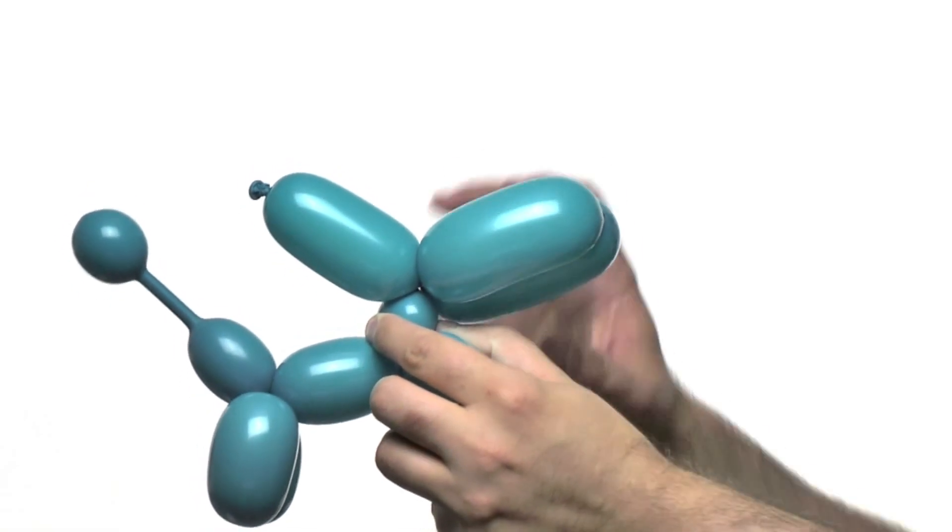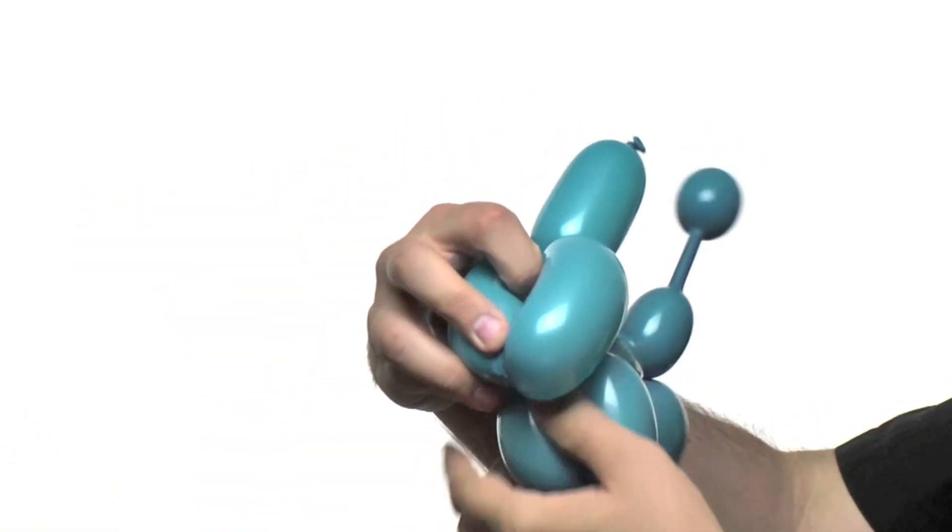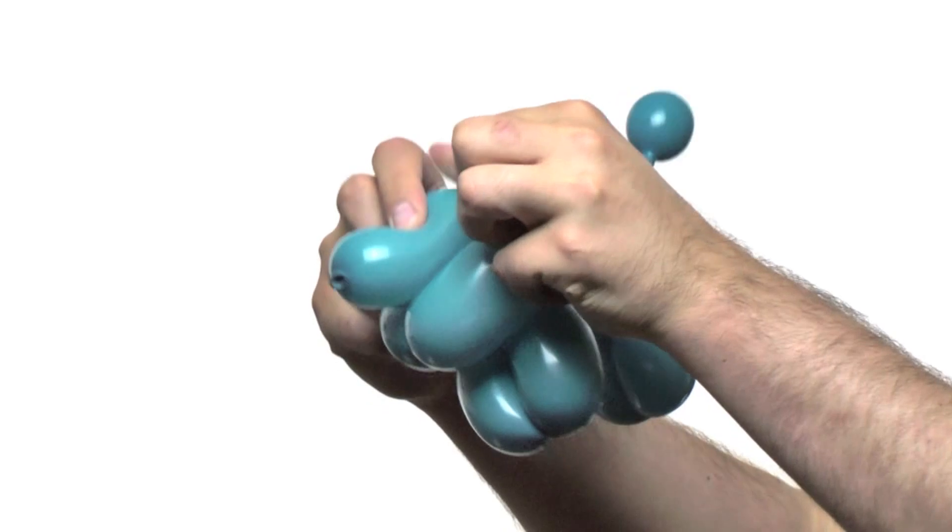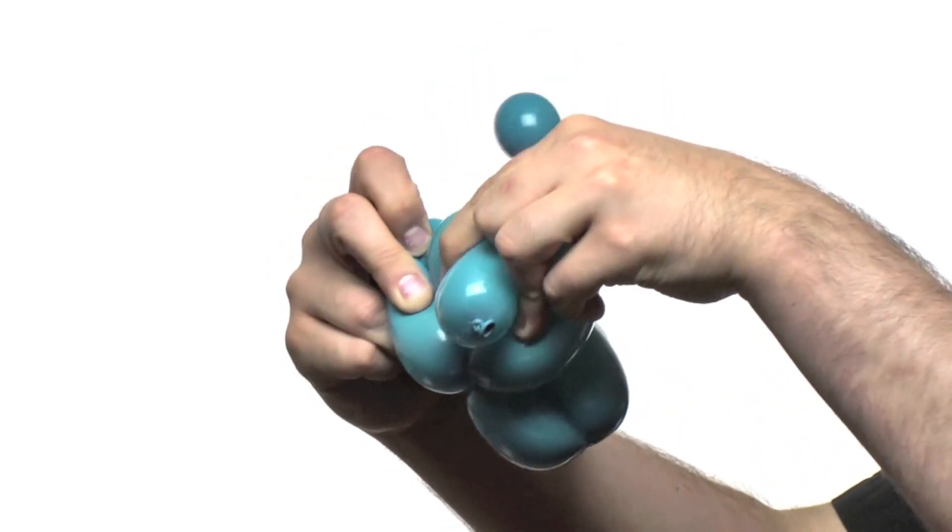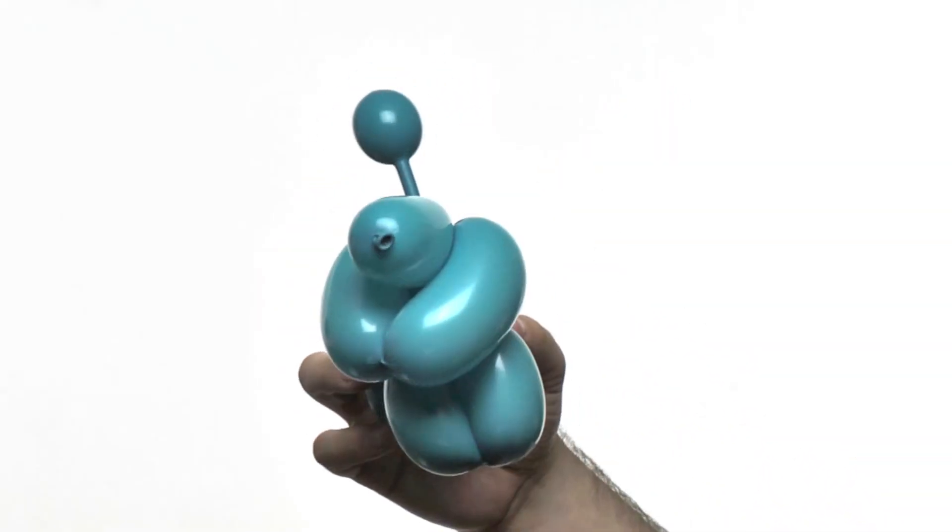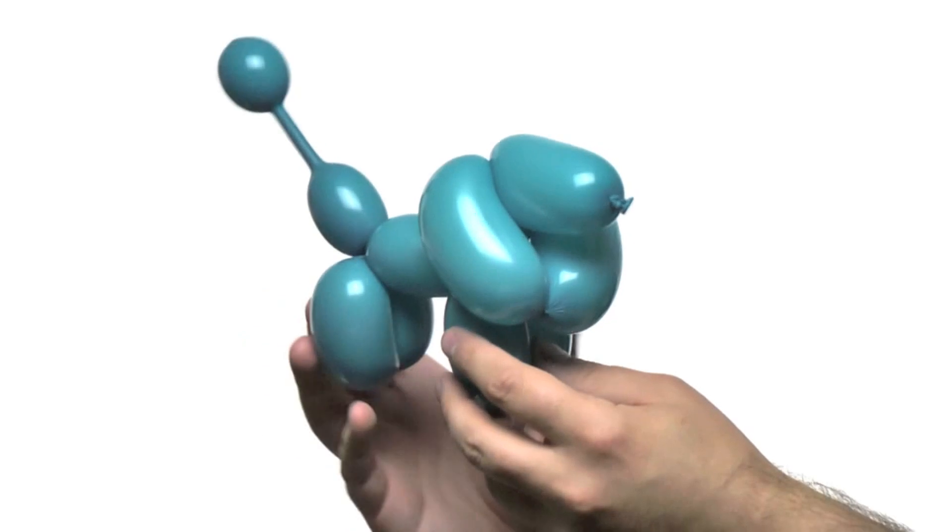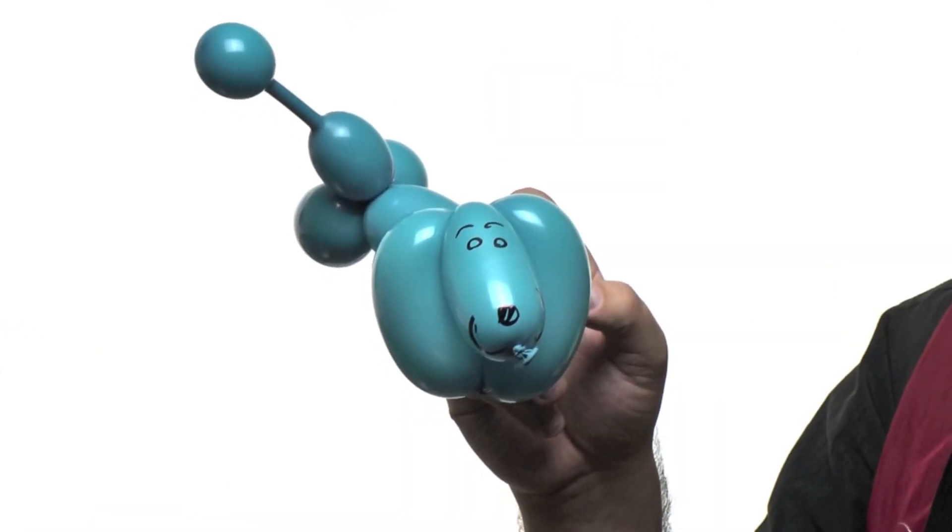Then we're going to fold the ears down and open them and insert the head into it. That gives the illusion that the dog's ears are sitting down. Now we draw a face on with our Sharpie. And our balloon dog is finished. For more balloon instructions, go to balloon-leafinanimals.com.